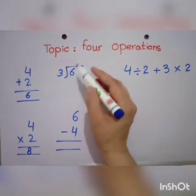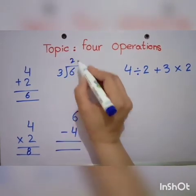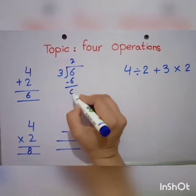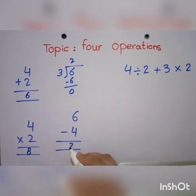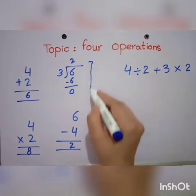3 divided by 6... 3 twos are 6. 6 minus 4 is equal to 2. We can solve this problem.